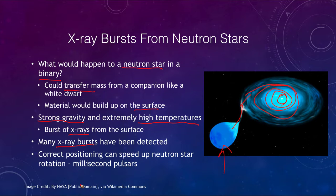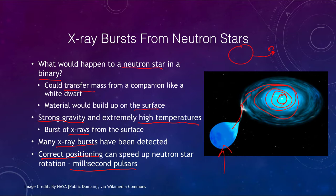Many x-ray bursts have been detected. Interestingly, depending on the positioning, mass transfer can actually speed up the neutron star's rotation. If material is sent in the direction the neutron star is already spinning — like pushing a child on a swing — it gives a small boost that speeds up the rotation. In fact, we find what we call millisecond pulsars, pulsing in thousandths of a second, at the absolute limit of what a neutron star can sustain without ripping itself apart. These are believed to be spun up by mass transfer: each transfer of mass gives the neutron star a little kick, causing it to spin faster until it reaches this limit.